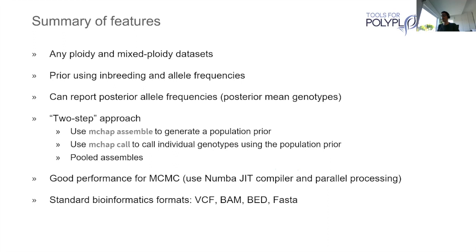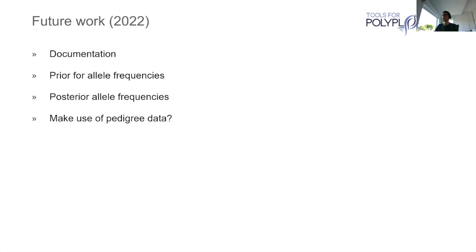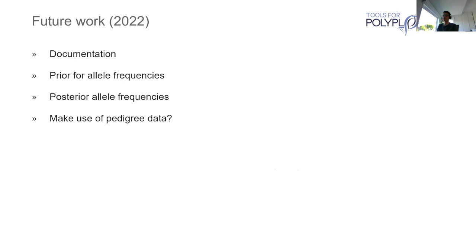MCHAP makes use of standard bioinformatic formats wherever possible. Looking at the future goals outlined last year — documentation, use of prior and posterior allele frequencies, and a stretch goal of incorporating pedigree data — the first three have been ticked off. Considerable progress has been made on incorporating pedigree data, though it's proven slightly more difficult than anticipated. The hope is to have a future update where pedigree data can be incorporated into the prior distribution.